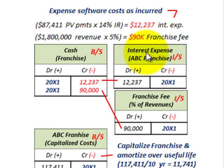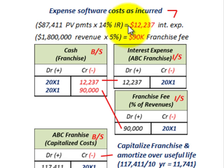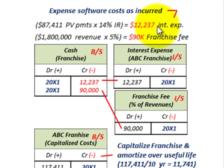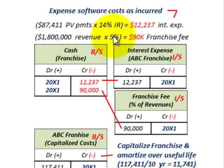Now let's look at how we'd record this franchise. First, we deal with the costs incurred during the year. We have interest expense: the present value of those payments, $87,411, times the 14% interest rate, gives us interest expense on this franchise of $12,237. We also have the franchise fee: revenues of $1,800,000 times 5% gives a franchise fee payable to the franchisor of $90,000 for the year.